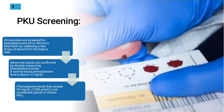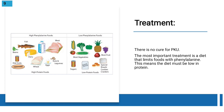Phenylalanine levels exceeding 20 mg per deciliter indicate classic PKU. Since this is an inborn error, we manage it through diet. The most important treatment is a diet that limits foods containing phenylalanine, meaning the diet must be low in protein. We give low-protein foods such as fish and beans rather than meat, and dairy sources also contain phenylalanine.